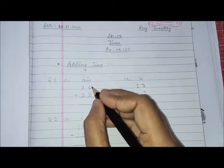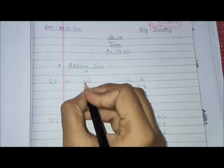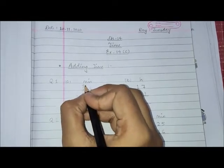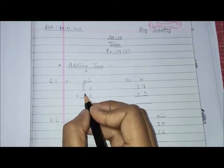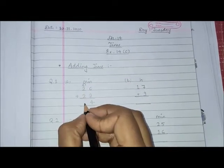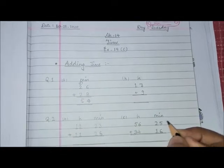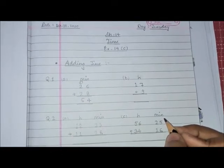So 8 plus 6 is 14. We will write 4 here, 1 carry over. 2 plus 2 is 4, plus 1 is 5. So 54 minutes is the answer.